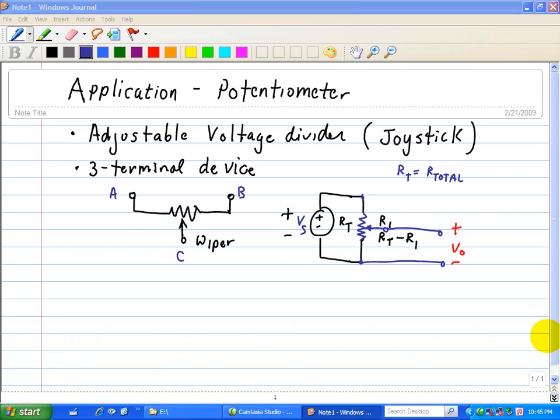And if you've used voltage dividers, you may not realize that joysticks are basically a two-dimensional potentiometer or voltage divider, one along the X direction and one along the Y direction.